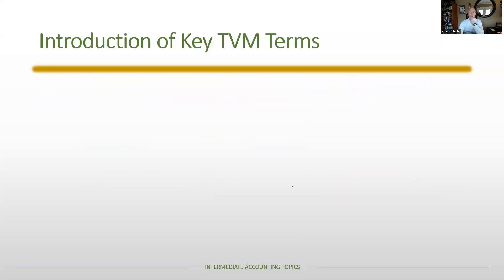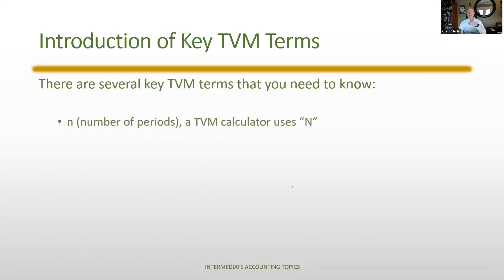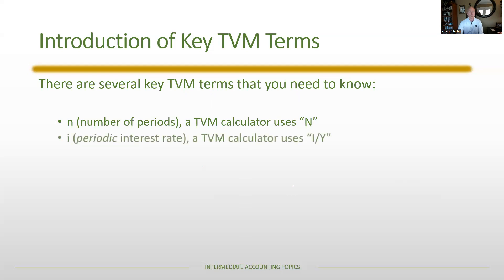Let's go through some key terms in time value of money. First, N is the number of periods — on your calculator it's the big N button. The I/Y on the calculator is your periodic interest rate. Present value (PV) is the lump sum today — a one-time amount. Payment (PMT) is a recurring payment at the end or beginning of each period.